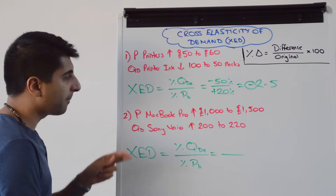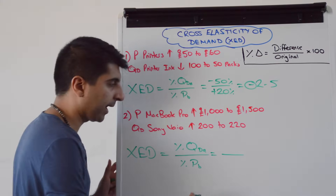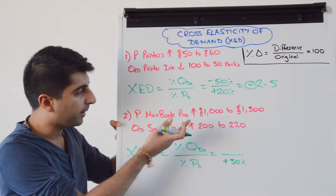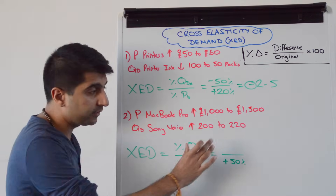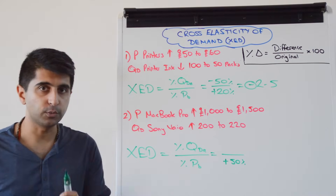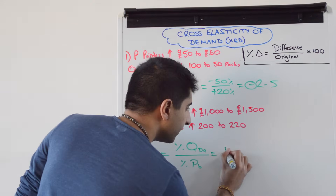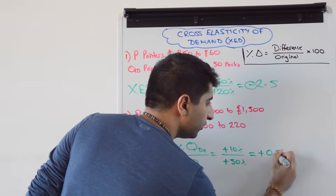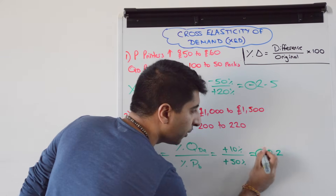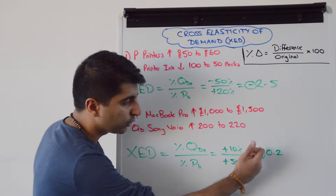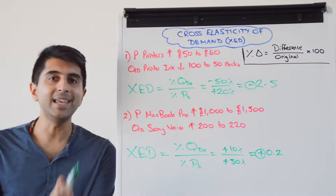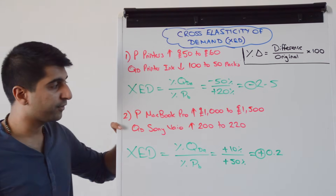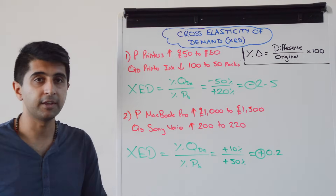Example two: the price of a MacBook Pro goes up from £1,000 to £1,500 — that's a 50% increase. Quantity demanded of Sony VAIO goes up from £200 to £220. If you can't see that's 10%, use the equation: difference is 20 divided by the original 200, times by 100. Keep the sign in — that's plus 10%. Doing the equation we get plus 0.2 as our final figure. The positive sign means these are substitute goods. The figure is less than one, so demand between these goods is price inelastic — they are weakly related substitutes. As the price of MacBook Pros goes up, quantity demanded of Sony VAIOs will go up but proportionally less than the increase in price of MacBook Pros.